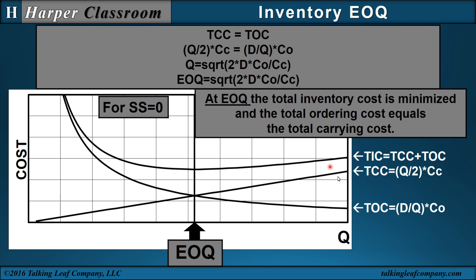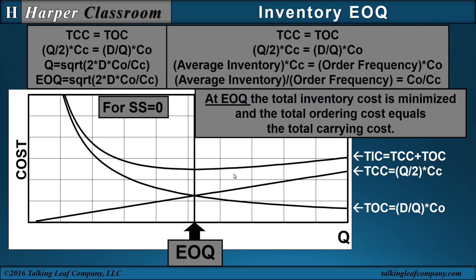That relationship — where total ordering cost equals total carrying cost — can be used to derive the EOQ equation: set the costs equal to one another, bring up the equations, and solve for Q. Since that Q yields a minimum total inventory cost, we call it EOQ. Taking the same equation and expressing Q over 2 as average inventory and D over Q as order frequency, we see that the ratio of unit ordering cost to unit carrying cost equals the average inventory divided by the order frequency — the average inventory per inventory period that minimizes cost. That relationship is used as the basis for many lot sizing techniques in industry.